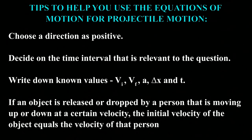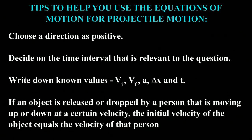If an object is released by a person moving up or down at a certain velocity, the initial velocity of the object equals the velocity of that person. For example, if a person in a hot air balloon moving upward releases a ball, the initial velocity of the ball equals the velocity of the moving balloon.